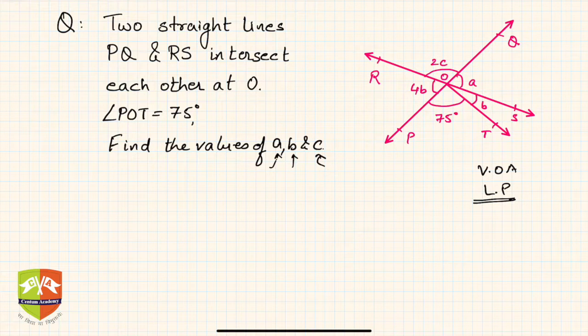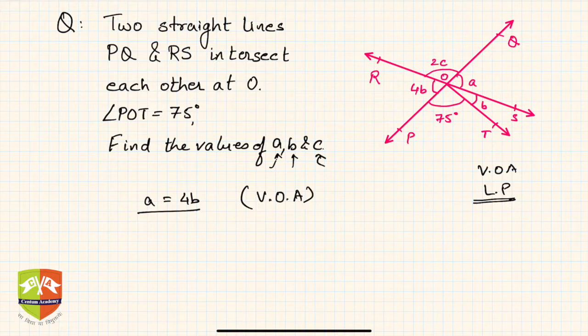Now clearly PQ and RS are straight lines. Hence angle a is equal to 4b. Why? Vertically opposite angles, right? So a is equal to 4b.